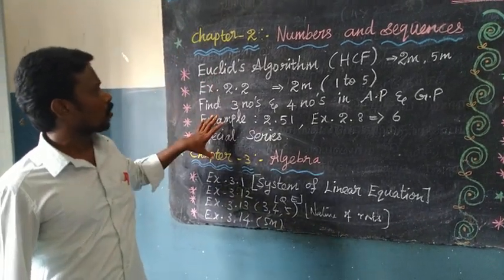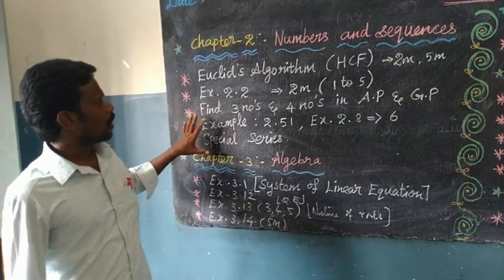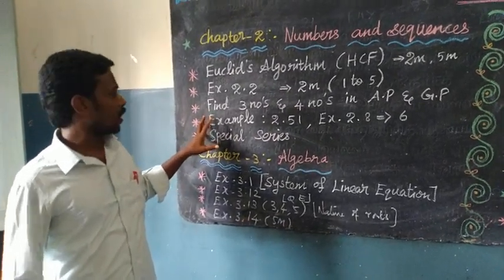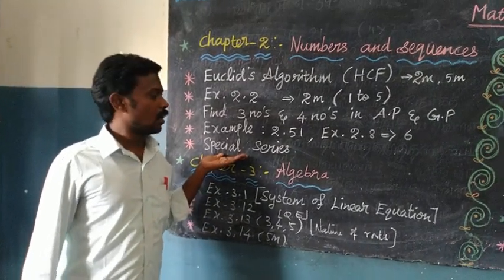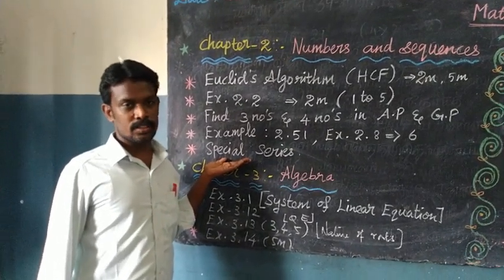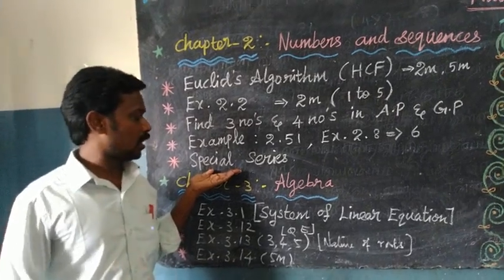If we cover Chapter 2, we will cover this whole one more. Special series - there are 5 marks or 2 marks, chances are enough. Let's make these chapters easy.